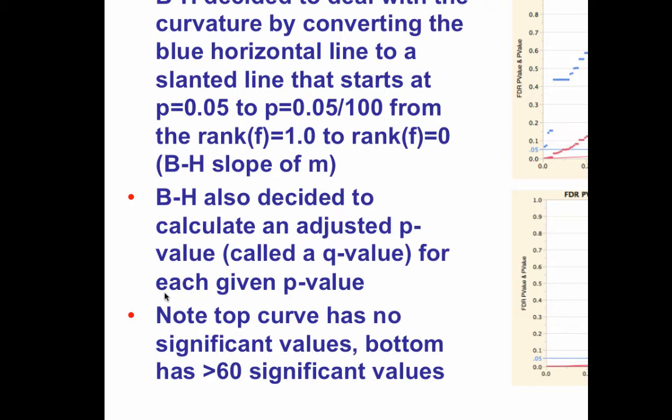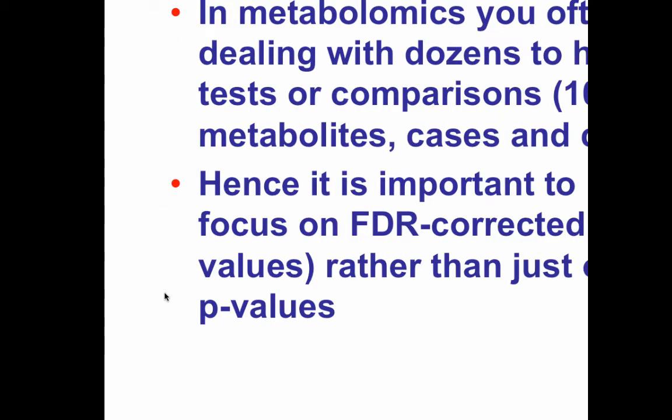In metabolomics, as you saw yesterday, you're often dealing with hundreds of comparisons, hundreds of metabolites, hundreds of cases and controls — effectively doing many pairwise comparisons. What you really want to do when assessing the significance of concentration or metabolite changes is report the FDR-corrected p-values — the q-values — not the raw p-values. Do not report the Bonferroni-corrected p-values.